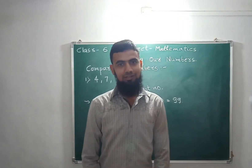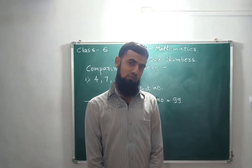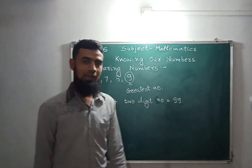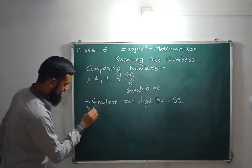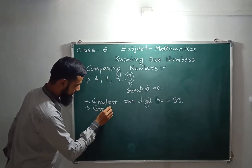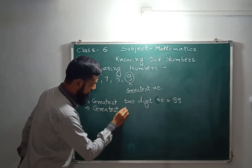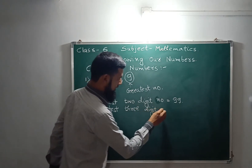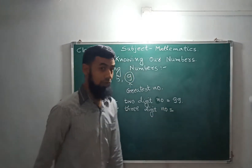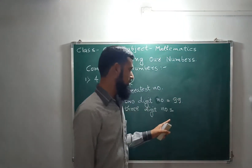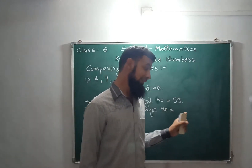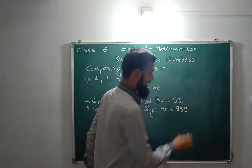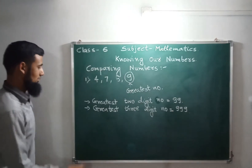The greatest two-digit number is equal to 99. One hundred is the smallest three-digit number. The greatest two-digit number is 99, and the greatest three-digit number is 999.